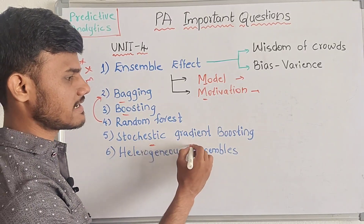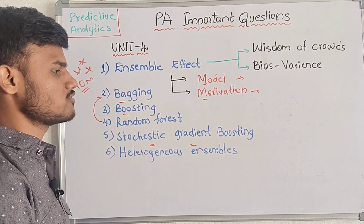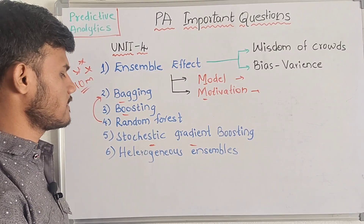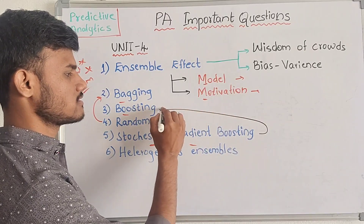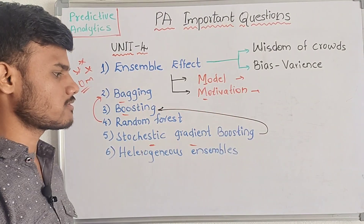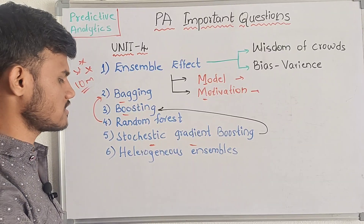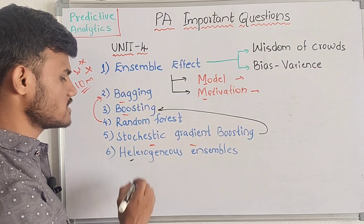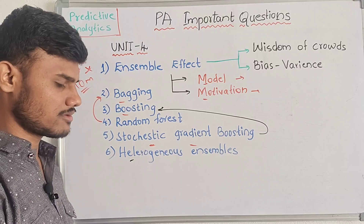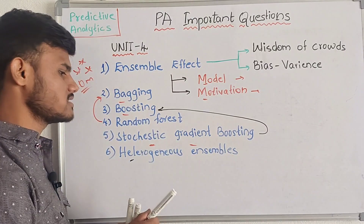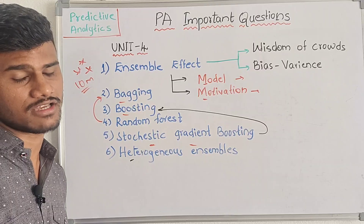Next is stochastic gradient boosting — this is a boosting question. The boosting and stochastic gradient boosting question can be answered easily. The last question is heterogeneous ensembling — the difference between homogeneous ensembling and heterogeneous ensembling.